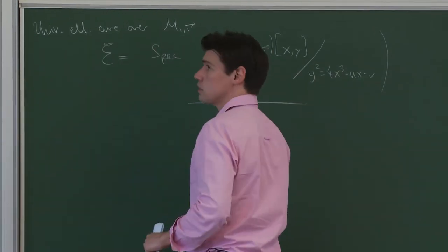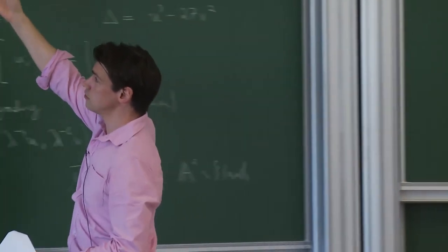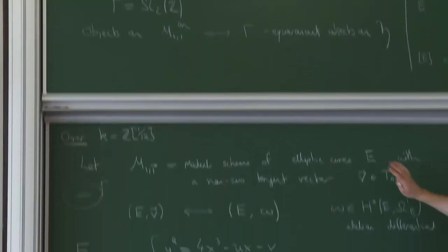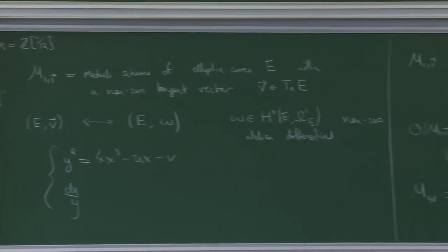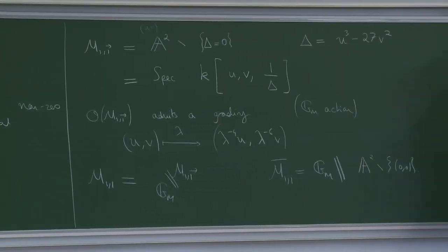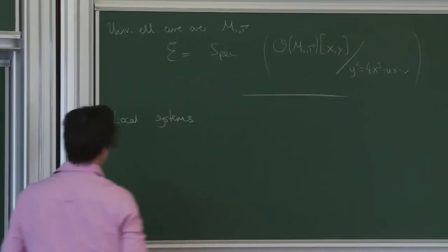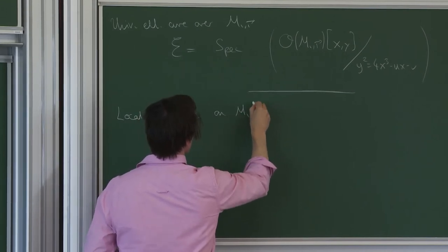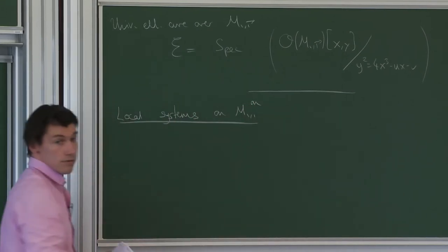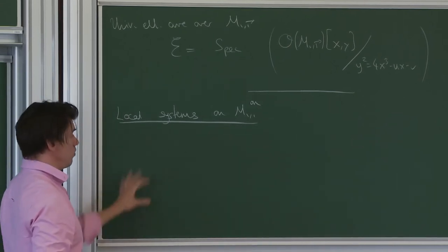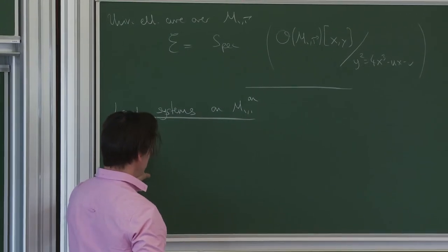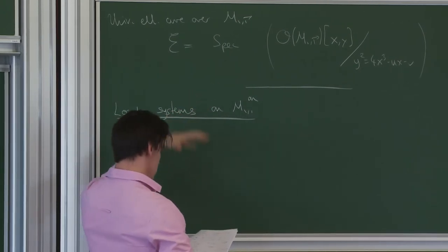Now I want to describe some local systems — first a local system on M11, and then an algebraic vector bundle with integral connection on M11. We're going to give ourselves a family of canonical local systems on M11, and out of these I'll define the Betty version of relative completion. These are the basic simple building blocks out of which we're going to construct iterated extensions, which are going to be very complex.